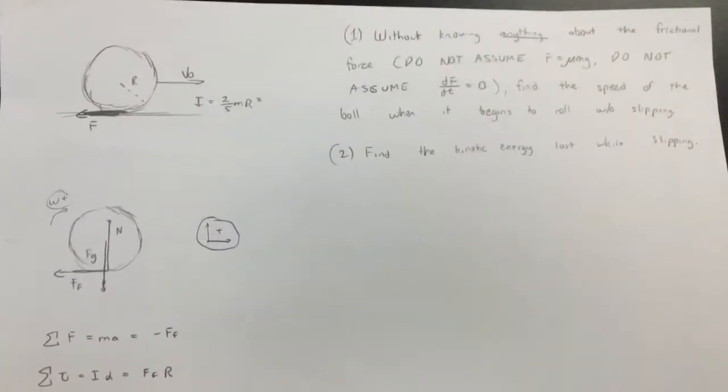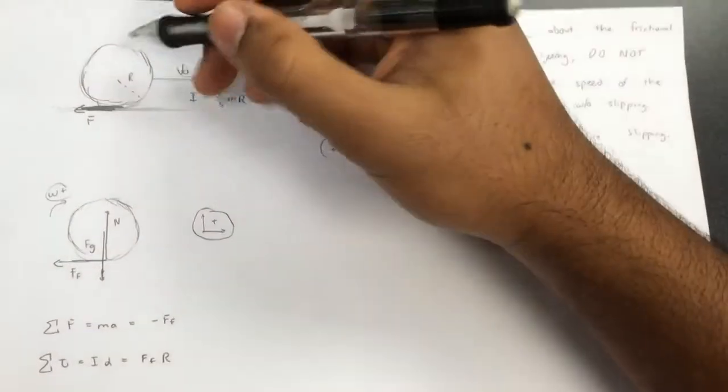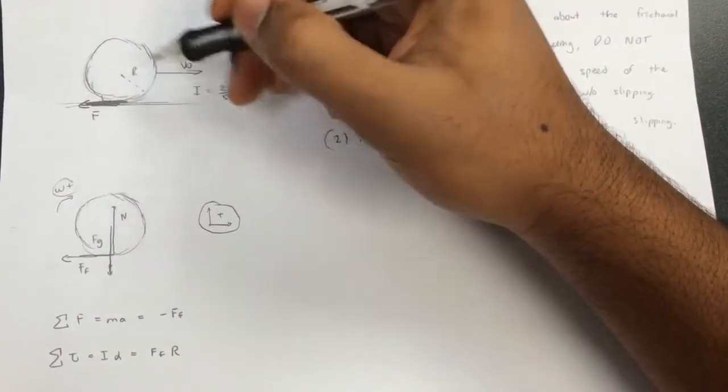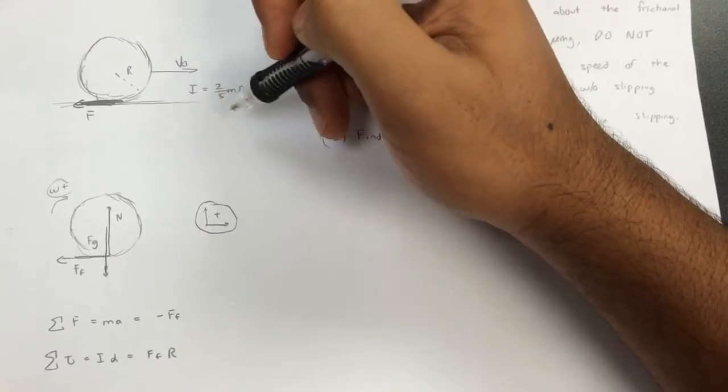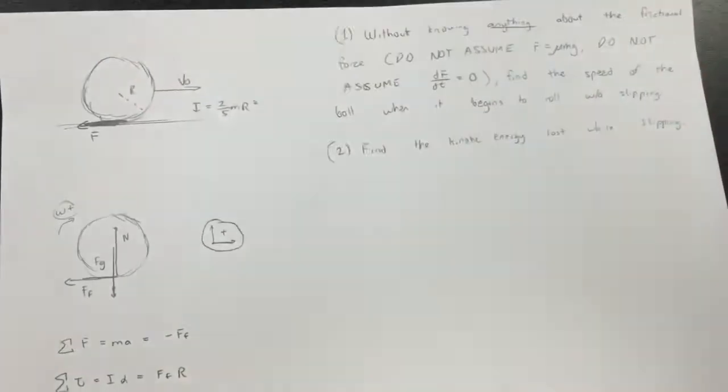So here's an interesting problem for you. I have a ball, and it begins to slide without rolling on a surface. This moment of inertia is given by 2/5 mr², as usual, because it's a sphere.